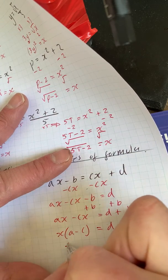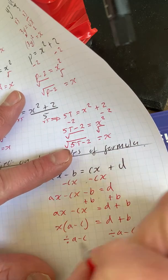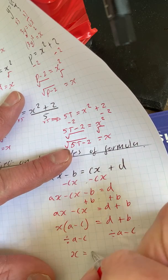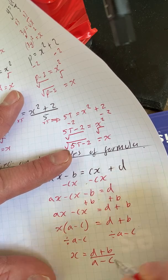Now to get rid of this, we have to divide what's in that bracket. We have to do that to both sides. So we've got x is equal to d add b over a minus c.